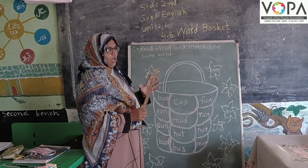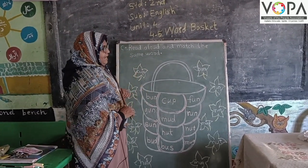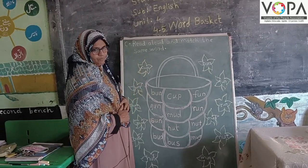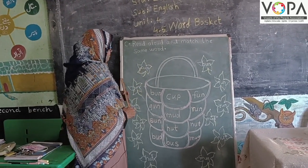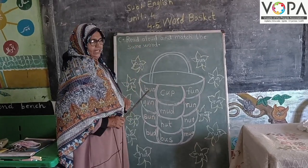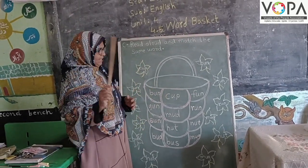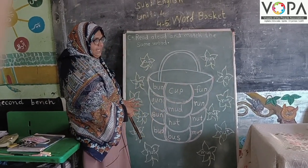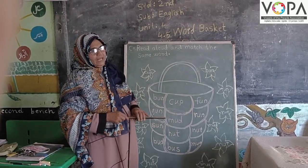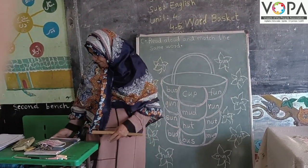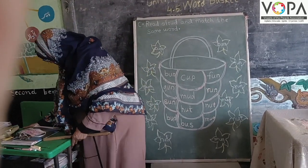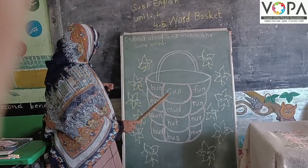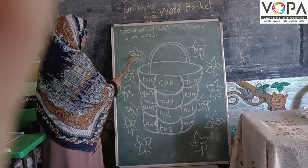Again we can find a word as a word. First of all, read aloud — so first we will read the words. C-U-P, cup.